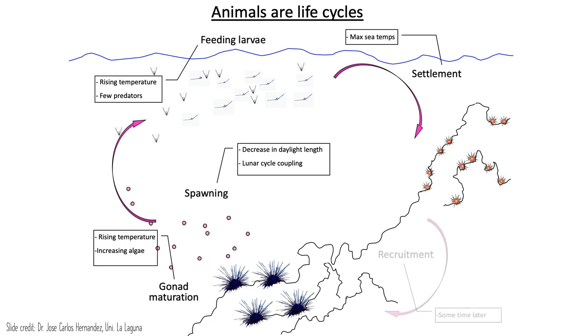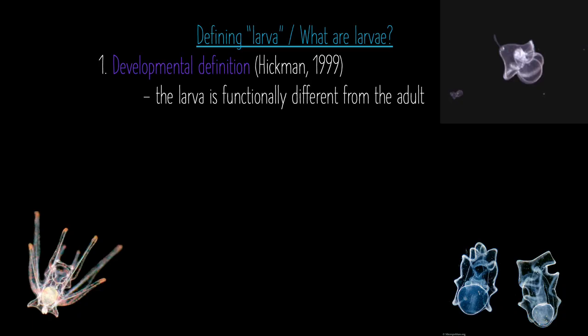Ultimately those juveniles will grow to a size such that they can recruit into the adult habitat. How then do we define what is a larva, or what are larval stages for a particular organism?